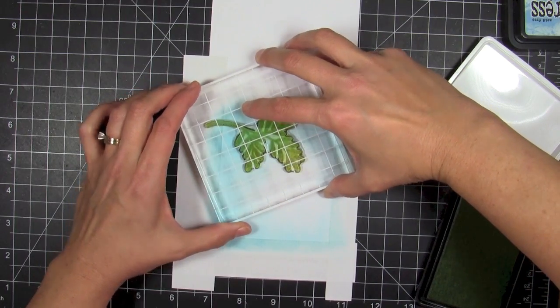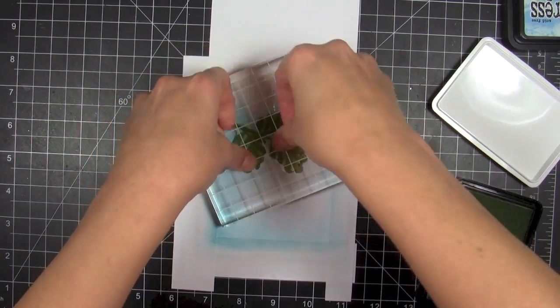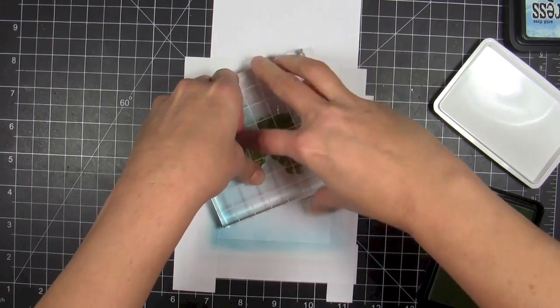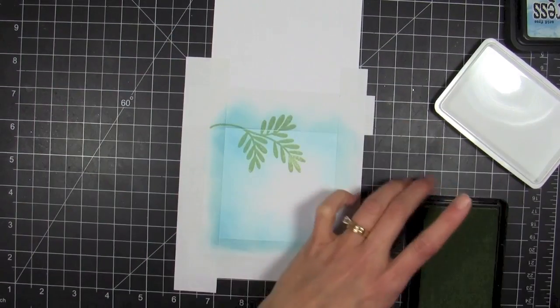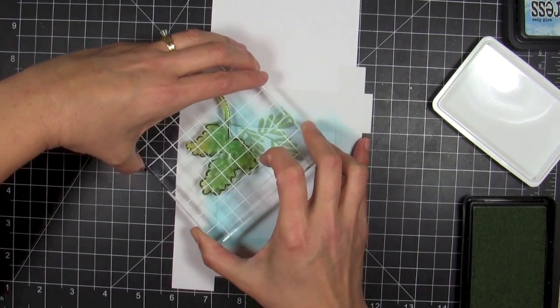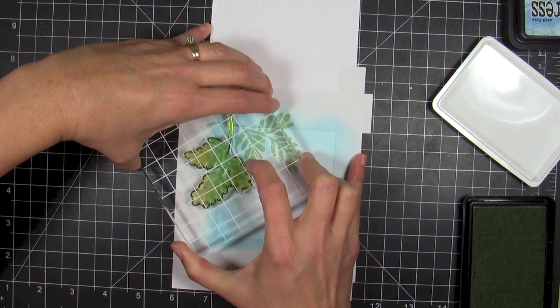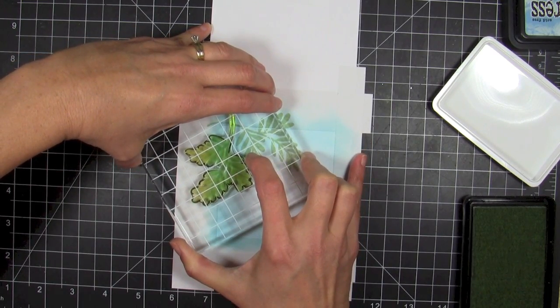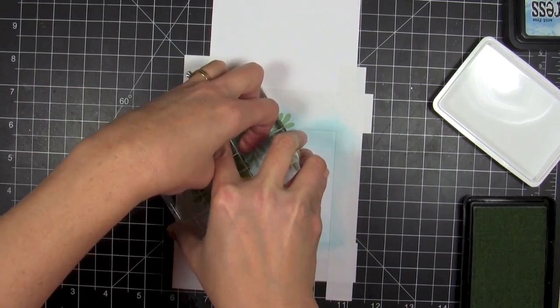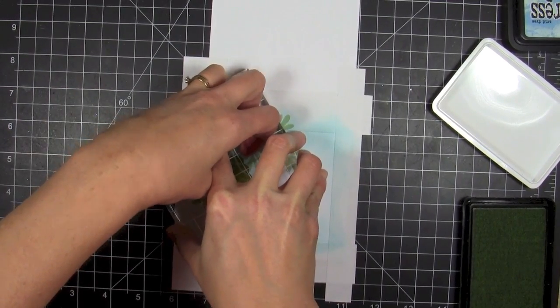Then I'm going to stamp the pine branch with the Soft Leaf ink color, which is a beautiful shade of green. It's going on pretty strong right now, but it will diffuse and even out very beautifully.